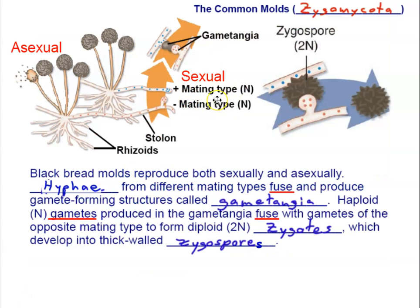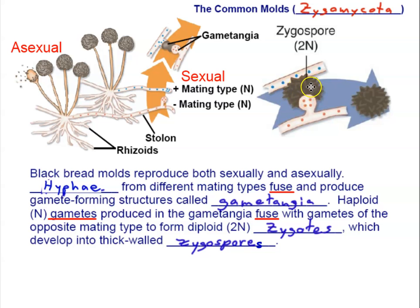Looking at a closer view of sexual reproduction: asexual reproduction is still going on — haploid sporangiophores producing haploid spores by mitosis. But here we have two different mating types, plus and minus. Their specialized hyphae form gametangia, the gametangia fuse, and then the nuclei within fuse to form diploid zygotes. The diploid zygotes are then walled off by a very tough protective covering — that is the zygospore — which can last a long time and survive harsh conditions like dry and hot environments.